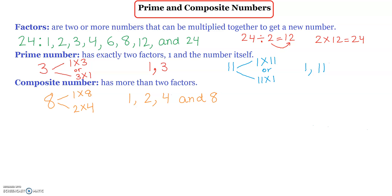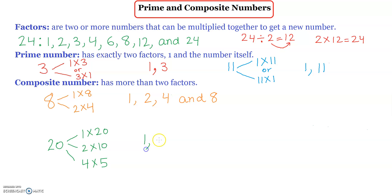Let's look at another example: 20. Let's find the factors of 20. We will start from 1: 1 times 20 is 20, 2 times 10 is 20, and 4 times 5 is 20. The reverse pairs — 5 times 4, 10 times 2, and 20 times 1 — give the same results. Therefore, the factors of 20 are 1, 2, 4, 5, 10, and 20. So 20 is a composite number because it has more than two factors.